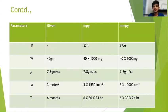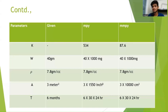The K value is constant: 534 for MPY and 587.6 for MMPY. The weight should be in milligrams for both MPY and MMPY, but the given data is in grams — convert to milligrams by multiplying by 1000. The density is 7.8 grams per cc, which is already in the required form for both MPY and MMPY. The area of 3 meters squared must be converted to in² for MPY by multiplying by 1550, and multiplied by 10,000 to convert to cm² for MMPY. The time of 6 months must be converted to hours for both MPY and MMPY by multiplying 30 × 24, where 30 is the number of days per month and 24 is the number of hours per day.